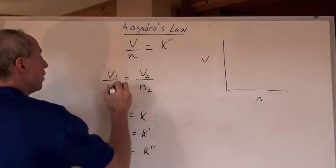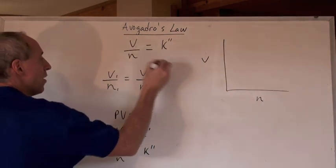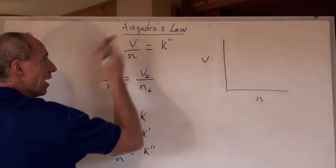And that means then that V1 over n1 equals V2 over n2, and that's Avogadro's formula for Avogadro's law.